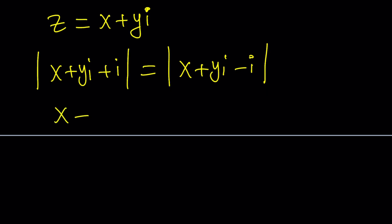And then we're going to take the absolute value of this. But before that, let's put the imaginary parts together. So Y plus one is going to be the imaginary part. And here, we can write this as Y minus one, multiply by I.